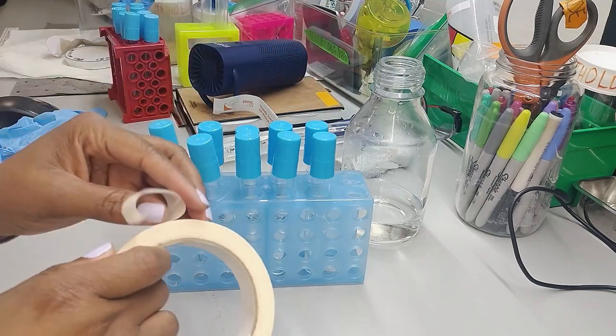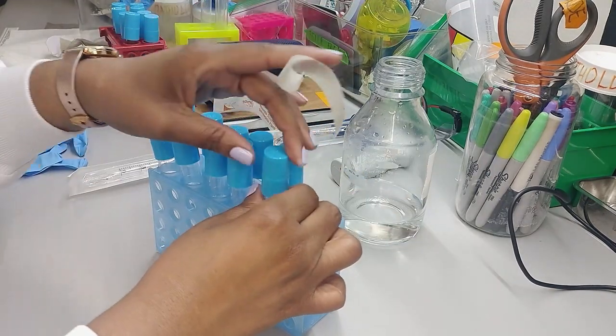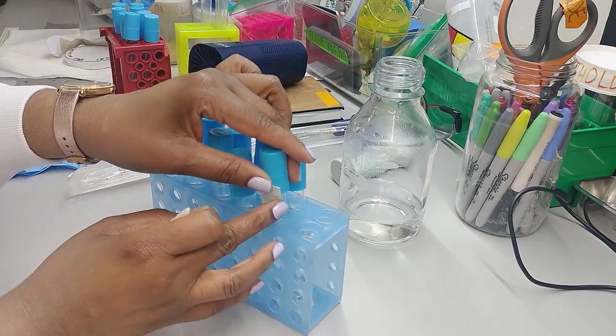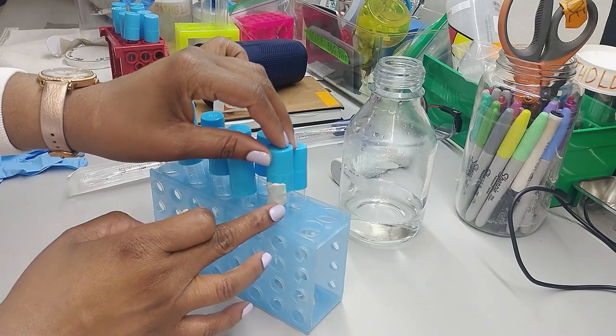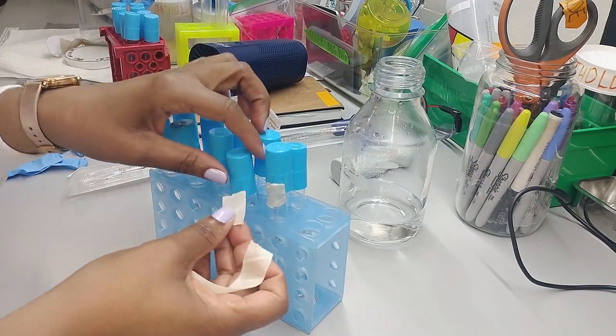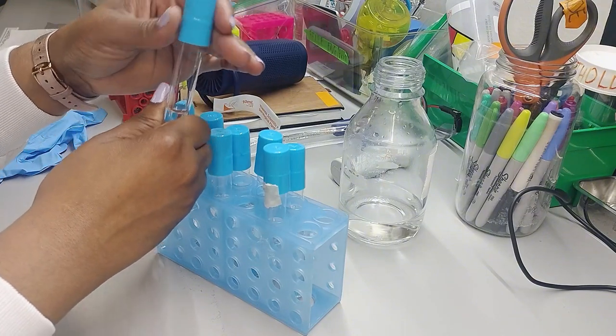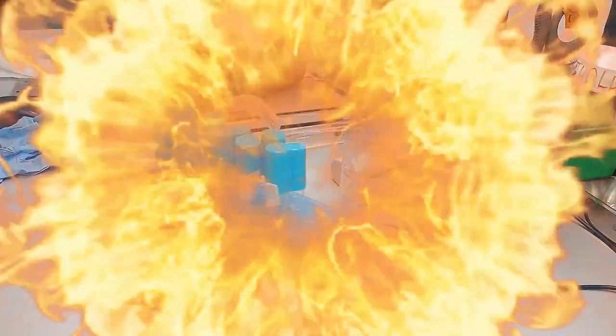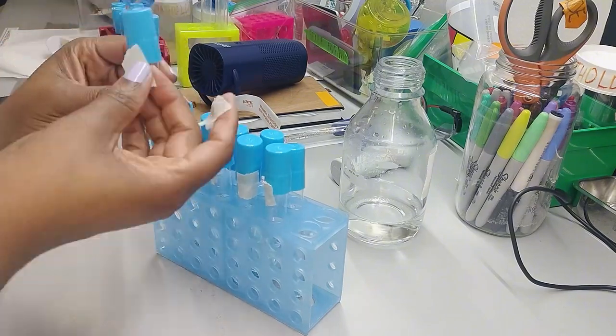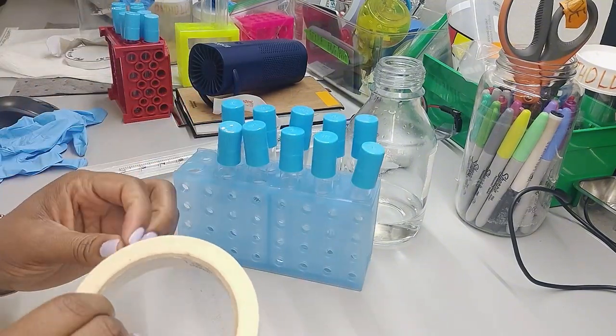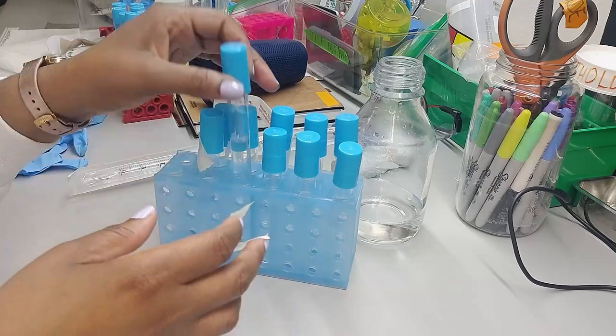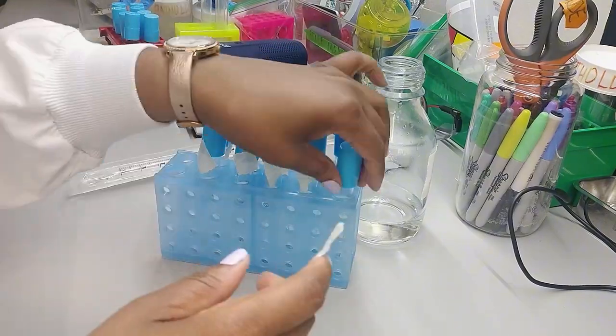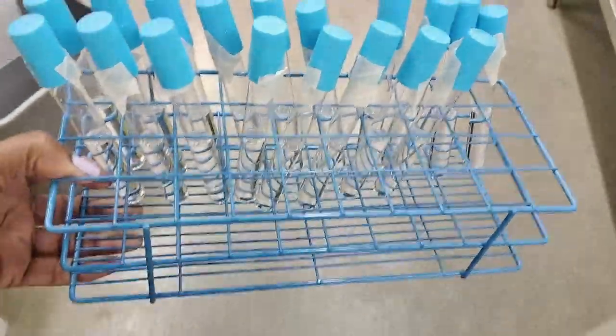I'm going to put autoclave tape across each of them so that way I know that they didn't open during the autoclaving process or someone did not open them. So it's just across a part of the lid and the neck of the test tube. I'm going to slightly unscrew it because if not, if it's on too tight, the pressure will build up in the autoclave.